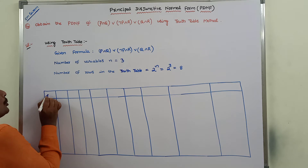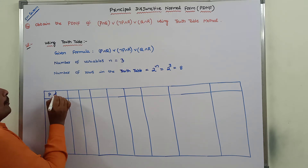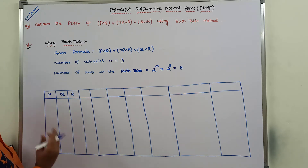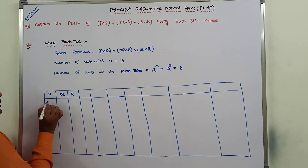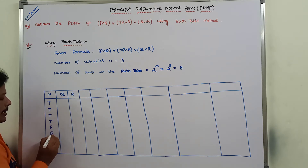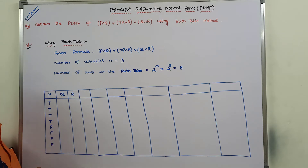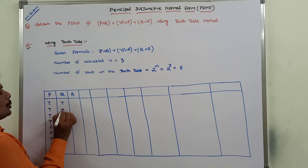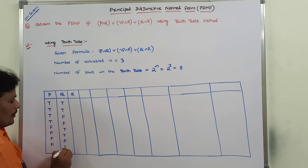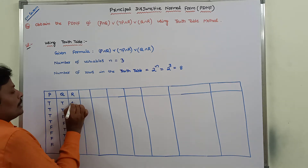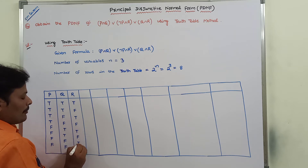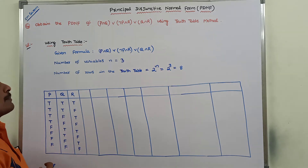The first column contains variable P, second column contains variable Q, and third column contains variable R. For the eight possible rows: first we write four trues and four falses for column P. After that we write two trues and two falses, then again two trues and two falses for column Q. For the third column R, we write alternating true and false. This is the simplest way to write the eight possible truth values for three variables.